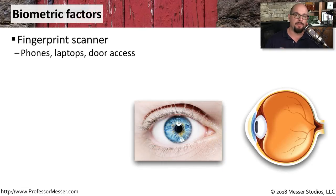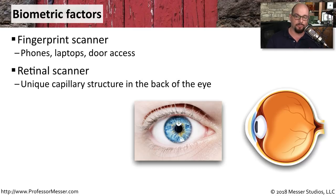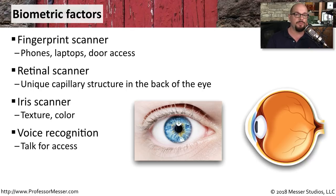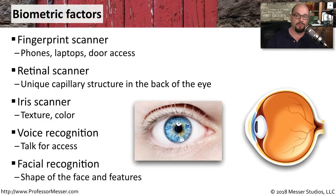We're increasingly using biometric factors as methods of access control. A fingerprint scanner is one that you might find on a door or on a laptop computer. We are also seeing more and more retinal scanners, because the retina has a very unique and unchanging nature that makes it a very good source of biometric data. There are also iris scanners that examine the texture and color of your iris, voice recognition readers where you talk to the device to gain access, and facial recognition to identify the shape or other characteristics of your face.